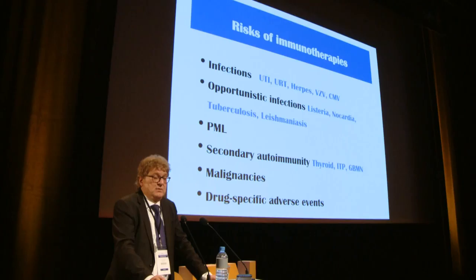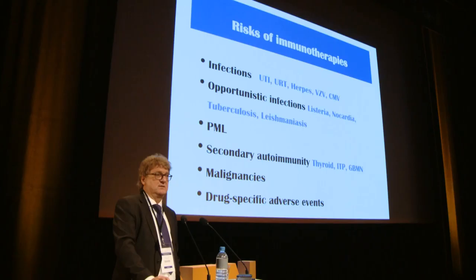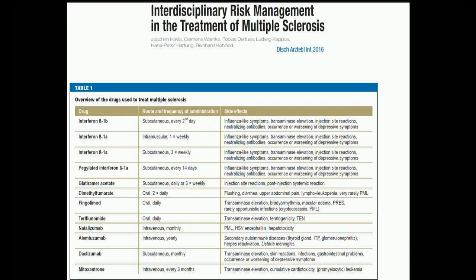Other dreaded complications include opportunistic infections — Listeria being an issue with alemtuzumab — secondary autoimmunity, possible increased risk of malignancy secondary to very effective immune intervention, and drug-specific adverse events. These mandate effective risk management plans to minimize the disadvantages from therapies used.